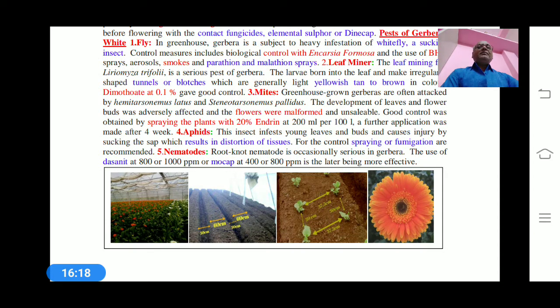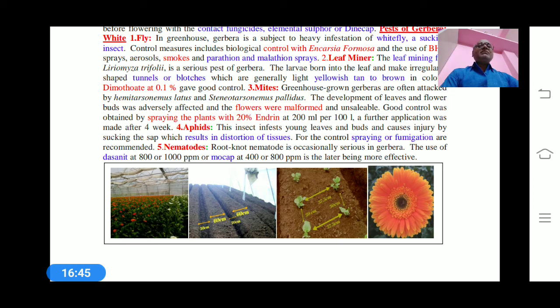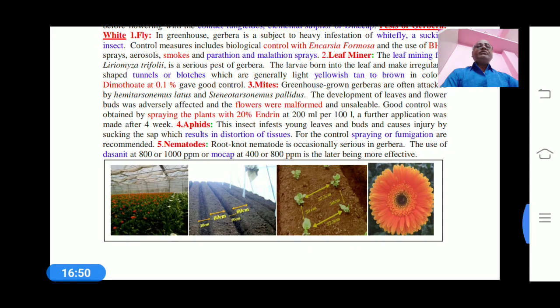Mites are another pest. Greenhouse-grown gerberas are often attacked by Hemitarsonemus latus. This mite develops on the news and flower buds, which are adversely affected. The flowers are malformed, and due to malformation there is no use or value in the market.